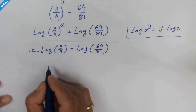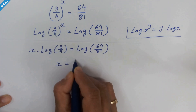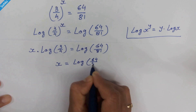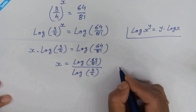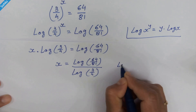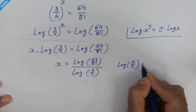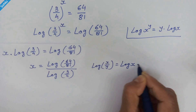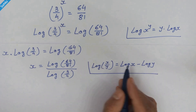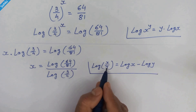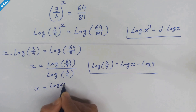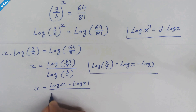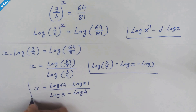Now let's move this part to the right hand side. So we have x is equal to log of 64 upon 81, divided by log of 3 upon 4. Now using the rule that log of x upon y equals log of x minus log of y, we get x is equal to log of 64 minus log of 81, upon log of 3 minus log of 4.